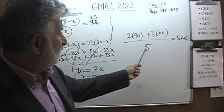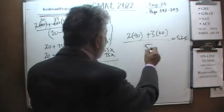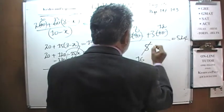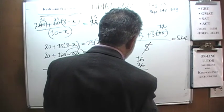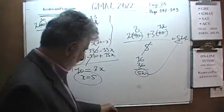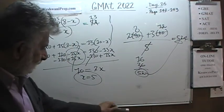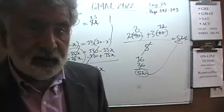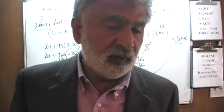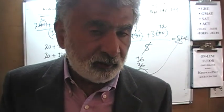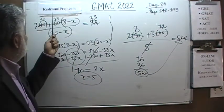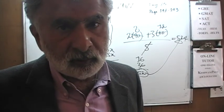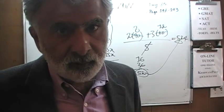Let's verify: we had 8 bananas and put back 5, so we buy 3 bananas at 60 cents and 2 apples at 40 cents — 5 pieces of fruit total. The total cost is 180 plus 80 equals 260 cents, divided by 5 equals 52 cents. It is indeed 52 cents — our work is correct. We'll stop here and meet again tomorrow. If you wish to work with me, go to my website at keshwaniprep.com to send an email or fill out the contact form.